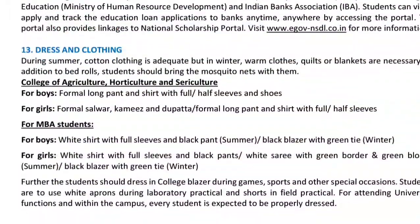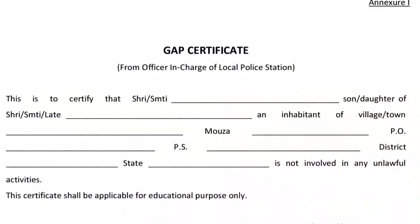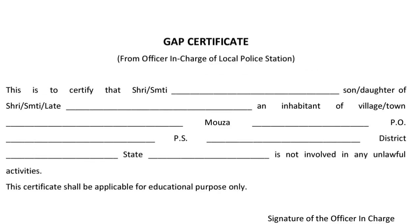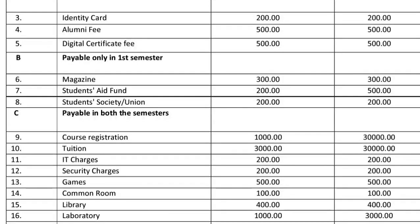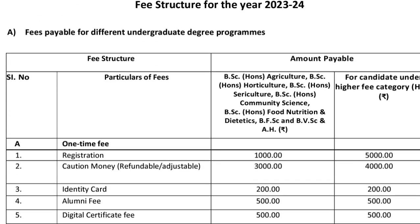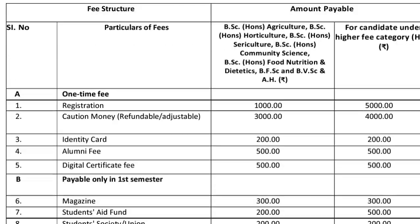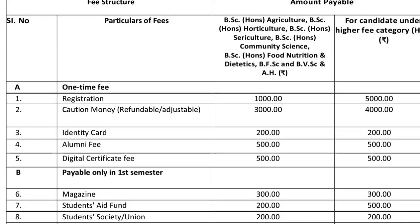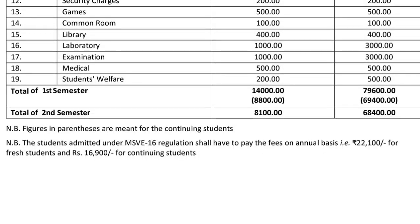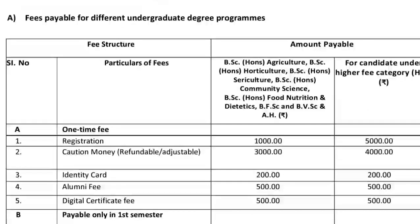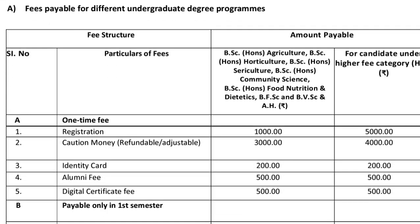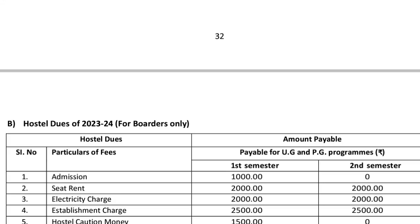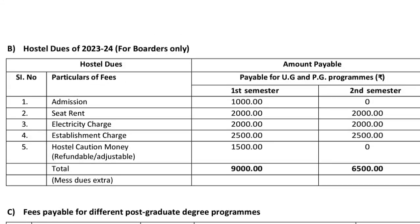Required documents include a gap certificate and a medical fitness certificate. Regarding fees: for undergraduate students, the first semester fee is approximately 102,000 and the second semester is 8,100. Higher fee category is 3,000. Hostel fees are also applicable. Thank you so much.